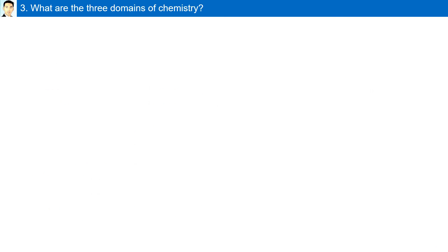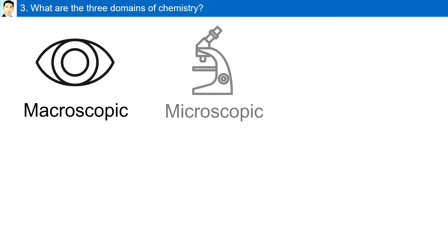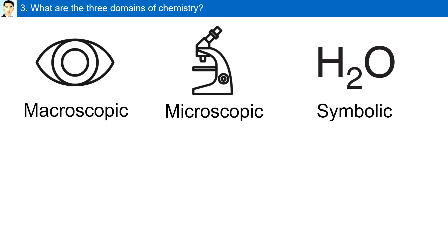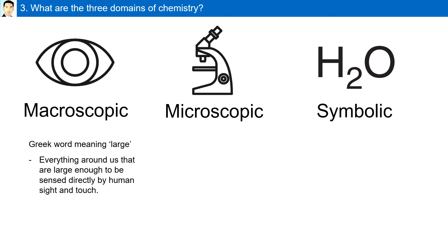What are the three domains of chemistry? The three domains of chemistry are macroscopic, microscopic, and the symbolic. Macroscopic is from the Greek word meaning large. This covers everything around us that is large enough to be sensed directly by human sight and touch.